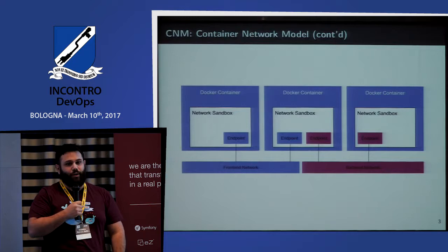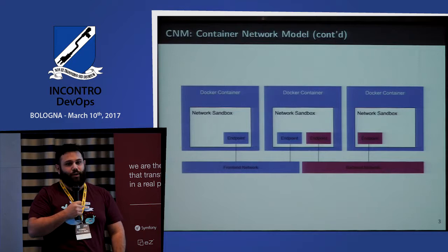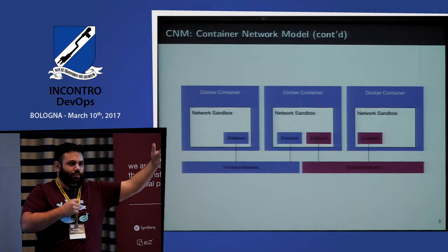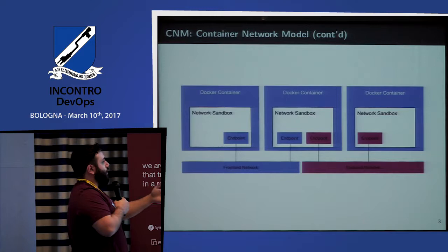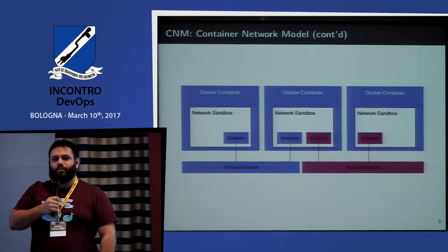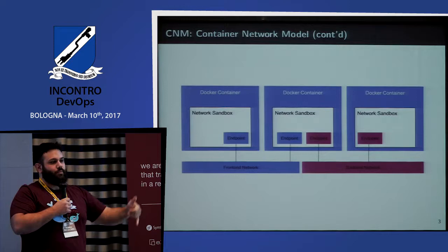Inside this namespace, there is the endpoint — one or more endpoints — which is the Ethernet interface: eth0, eth1, eth2, etc. The endpoint is a veth pair with the other network. In the other network there's another interface called a virtual interface, and it's a veth pair.